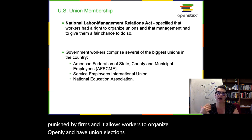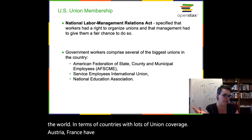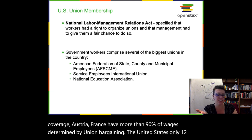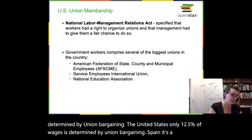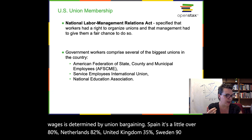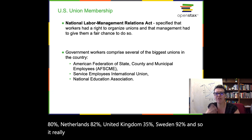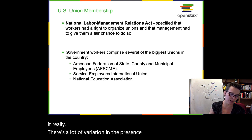We see lots of union coverage variation around the world. Austria and France have more than 90% of wages determined by union bargaining, while the United States is only 12.5%. Spain is a little over 80%, the Netherlands 82%, the United Kingdom 35%, and Sweden 92% — so there's really a lot of variation in the presence of unions around the world.